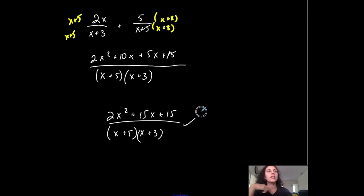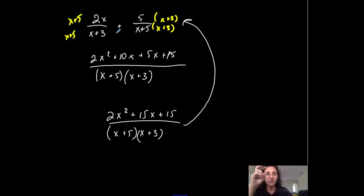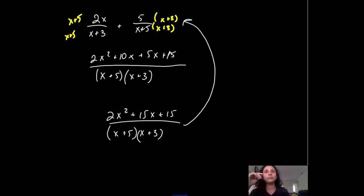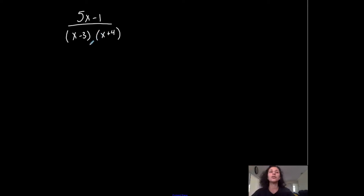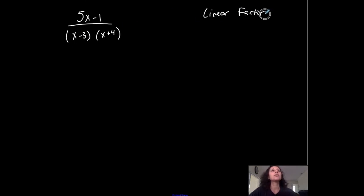Partial fraction decomposition is going from that single fraction back into a sum or difference of separate ones — going in the opposite direction. So if your denominator is not factored, you want to factor it. This example is already factored. If you look at the factors, they're both linear, and they're not repeated — I only have one x minus 3 and one x plus 4. So these are non-repeated linear factors.